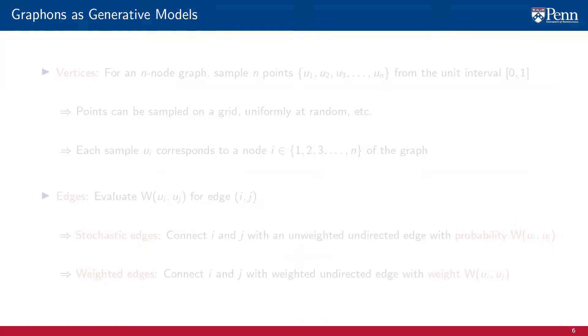To use graphons as generative models, it suffices for us to consider samplings of the unit or 0-1 interval. To generate the vertices of a graph with n nodes, we sample n points u_1 through u_n from the unit interval. These points can be sampled in a number of ways. Most often, we take them from a regular partition of the unit interval or we sample uniformly at random from the unit interval.